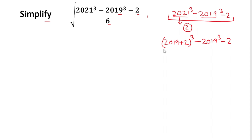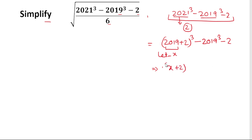For simplifying further, we will let 2019 equal x. So our expression will be x plus 2, whole cube, minus x cubed, minus 2.